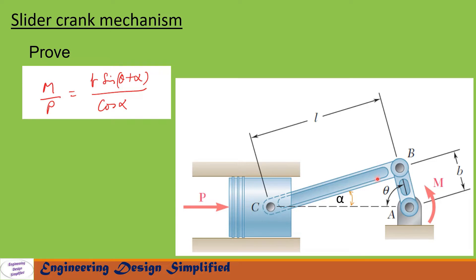In this picture is shown a horizontal slider crank mechanism. Link AB is the crank, link BC is the coupler, and component C is the piston. On this piston a force P is applied, and to counter that, a moment M is applied on the crank. The crank length is b and the coupler length is l. The angle between the coupler and horizontal is alpha, and the angle between the crank and horizontal is theta.